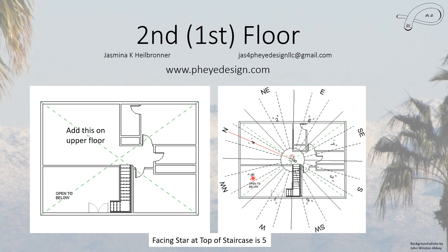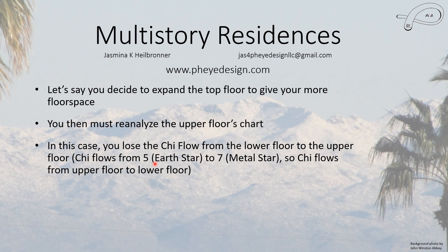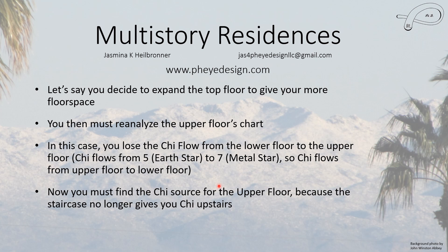What happens now is that the west and northwest sectors are largely missing because that area is still open to below. In the previous layout where the centers differed, there were no truly missing sectors — just some less-occupied ones. But this changes everything, because now at the top of the stairs we have a facing star 5. Chi will flow from 5 to 7 because earth produces metal, meaning chi flows from the upper floor to the lower floor. You've destroyed the chi flow by doing this expansion, so now you must determine what your chi source is for the upper floor.